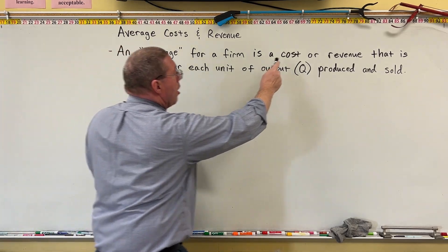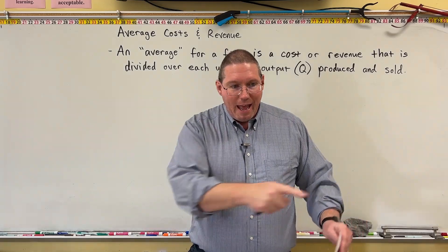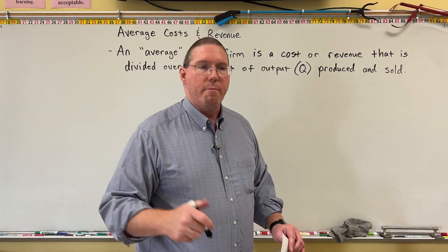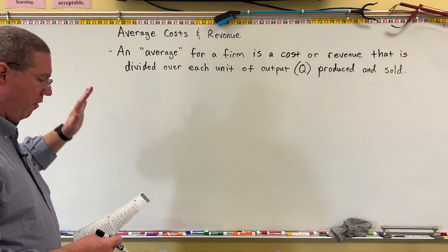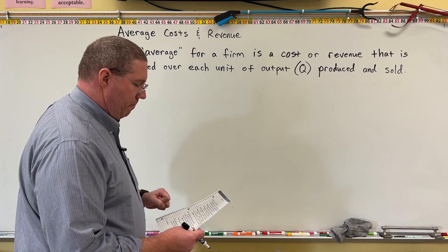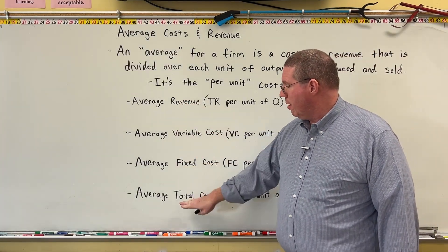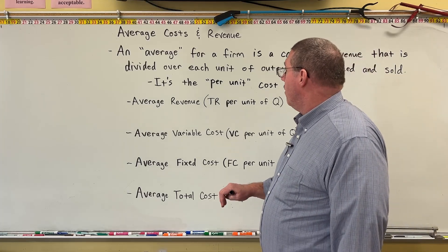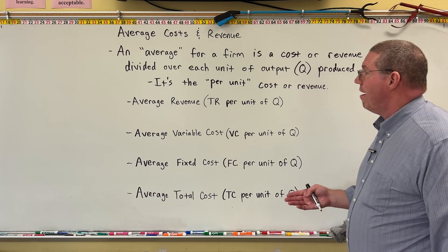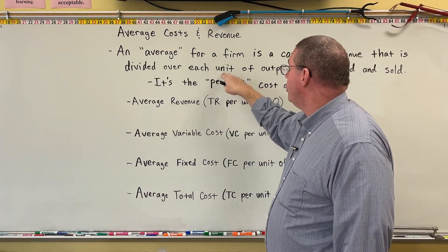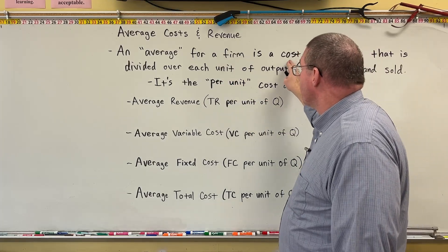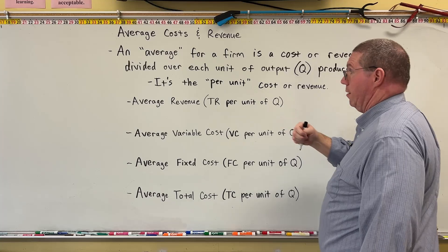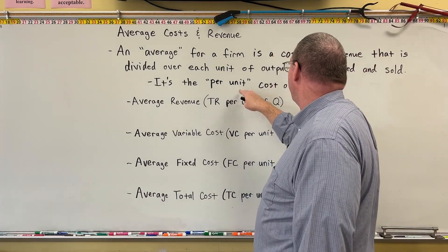In an average, we take a cost or revenue — like total cost — and every single unit of production is responsible for a little bit of the cost, but it's the same number for all of them. There are four averages we're going to be concerned with in this class at an introductory principles level. An average is essentially the per unit cost or revenue: if it's cost divided over each unit, then it's the cost per unit; if it's revenue divided over each unit, it's the revenue per unit.